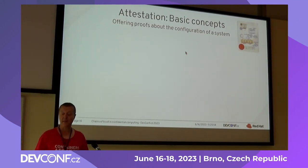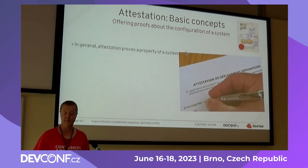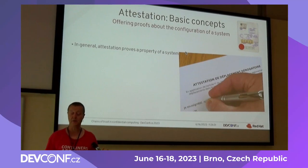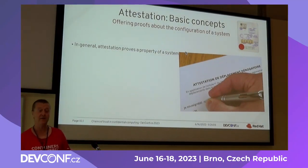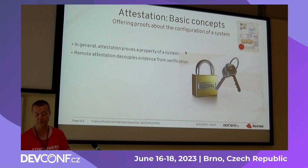The basic concept is that you're offering some proof about the configuration of a system. Generally speaking, attestation is really proving some kind of property. In our case, what interests us is: is this system actually running with encrypted memory on, with the right firmware, with the right properties?